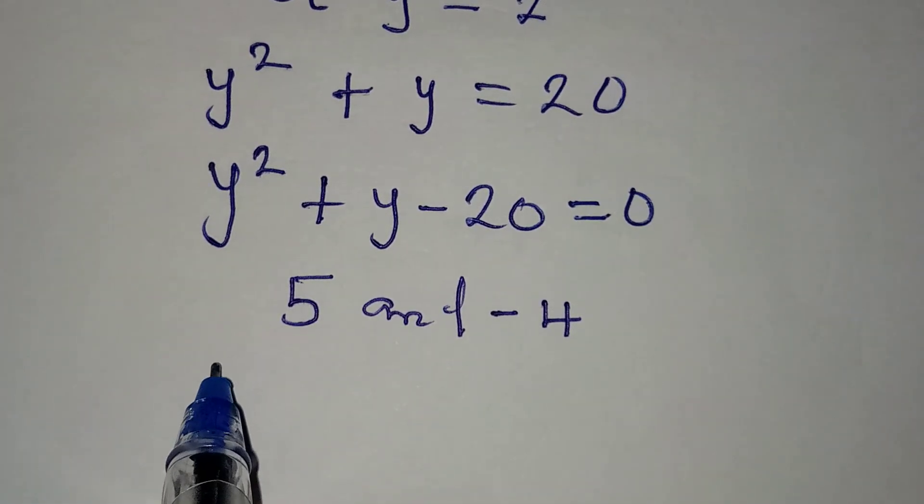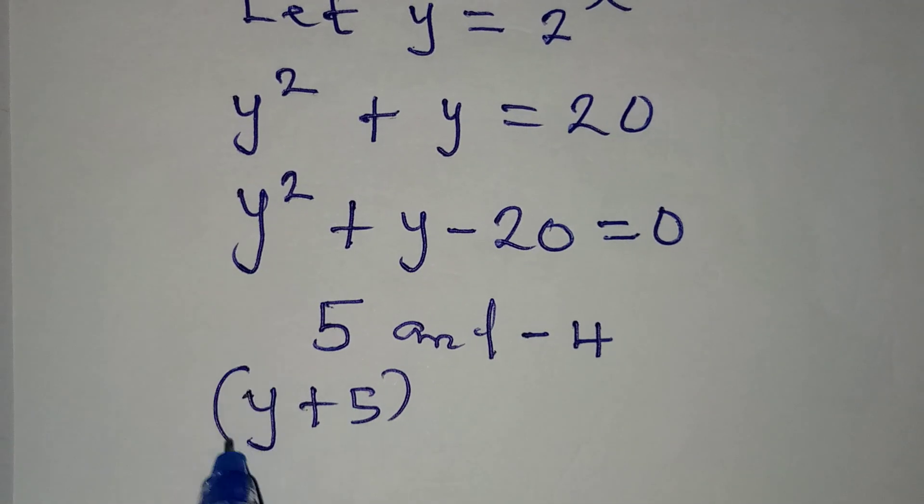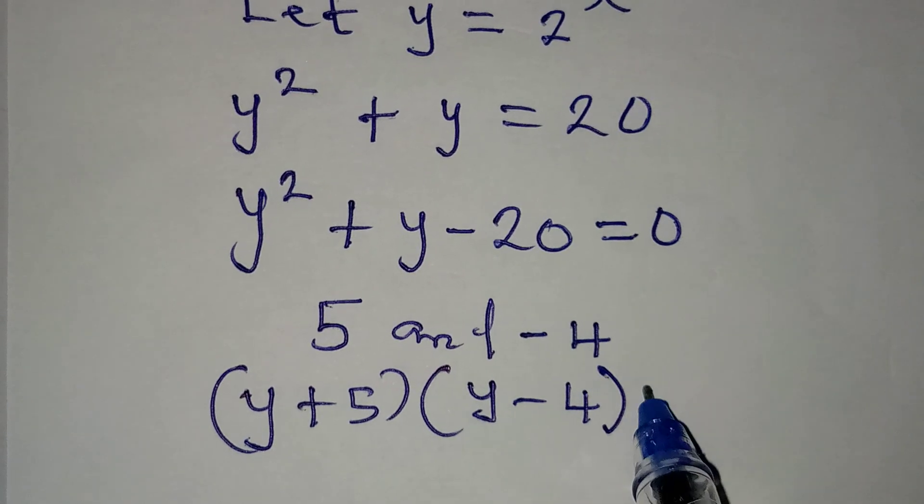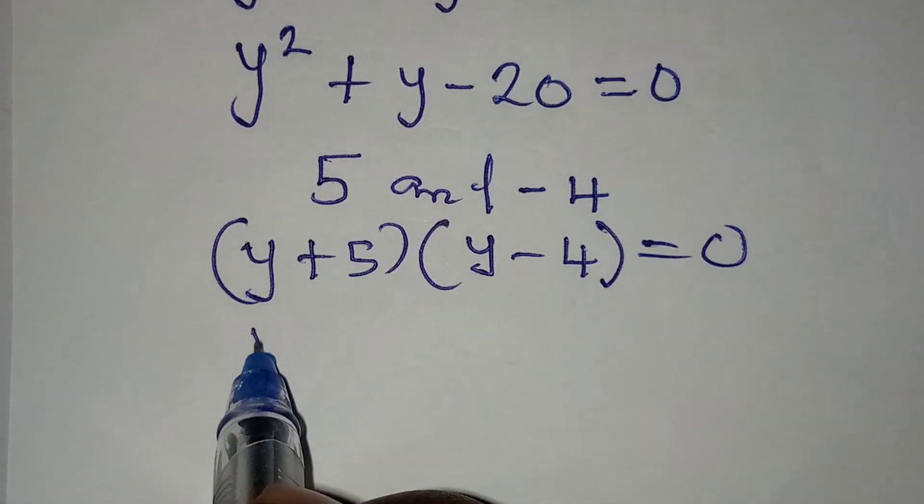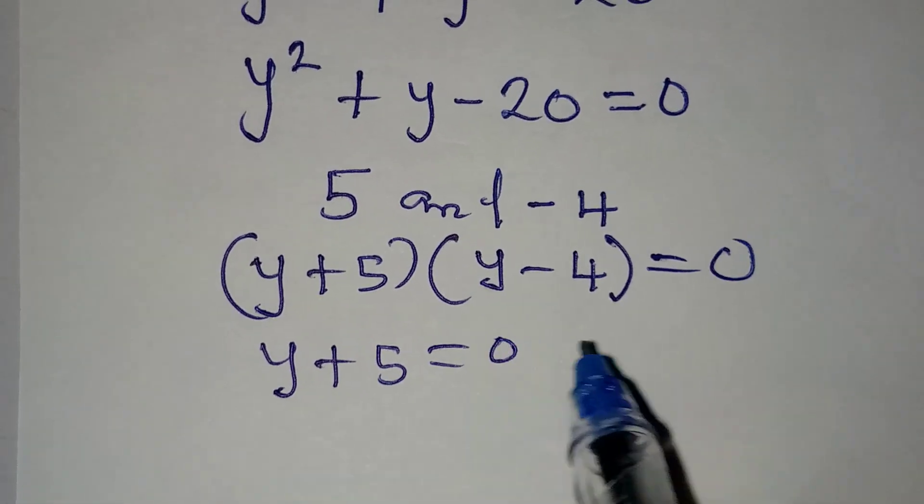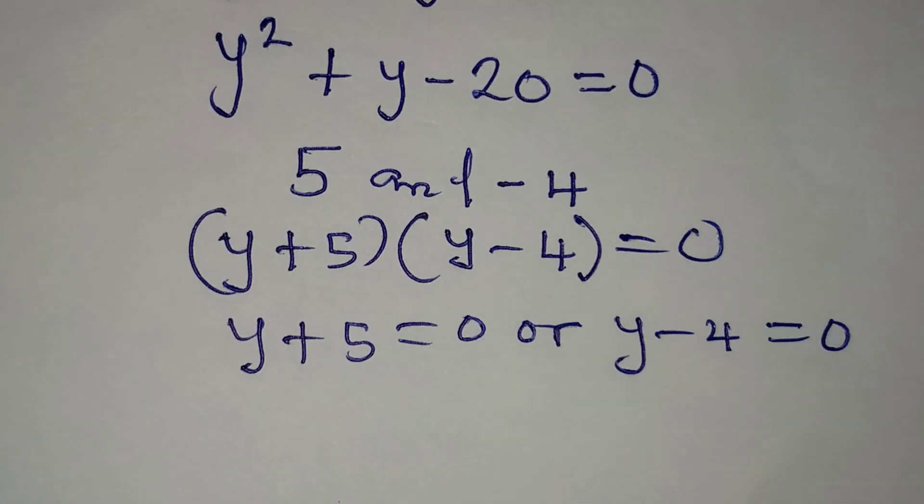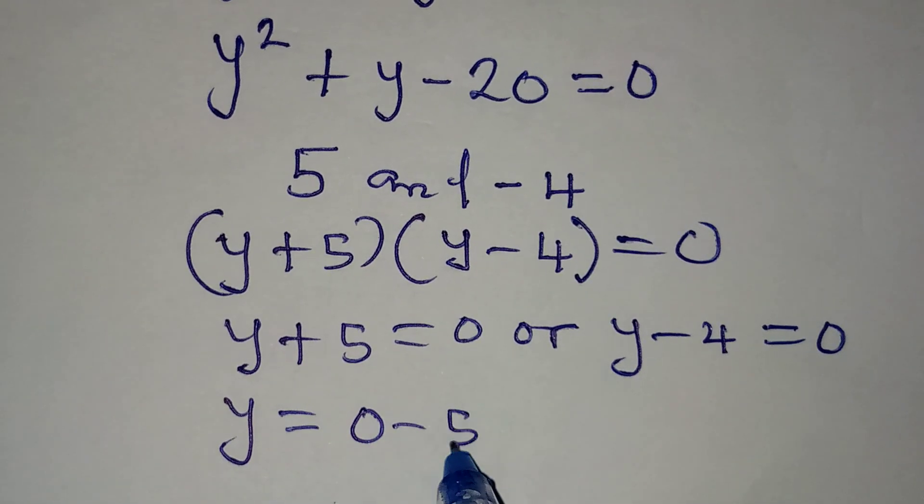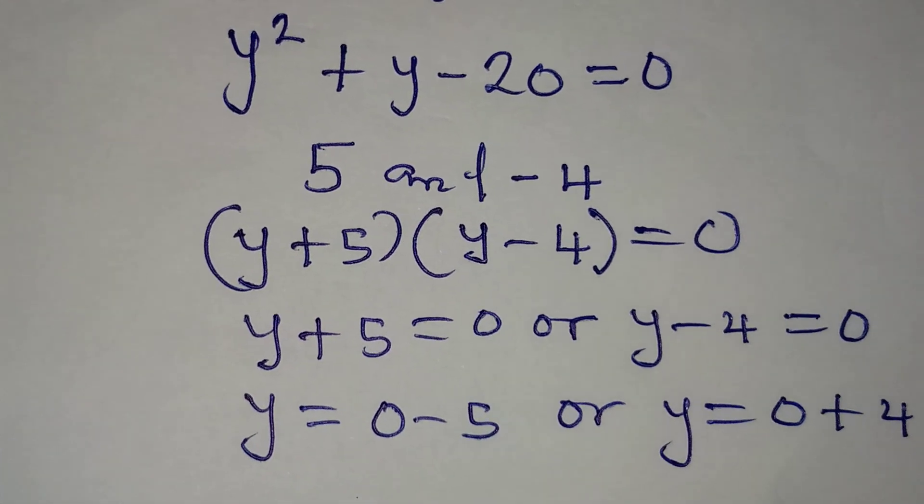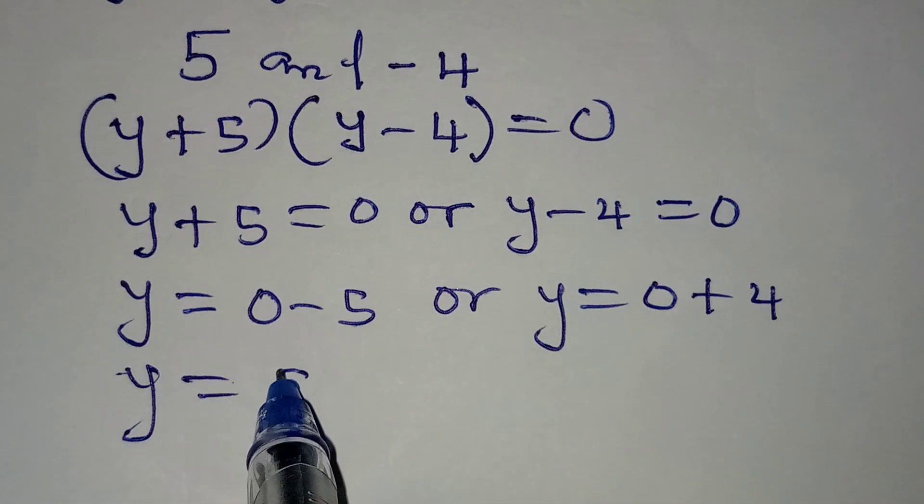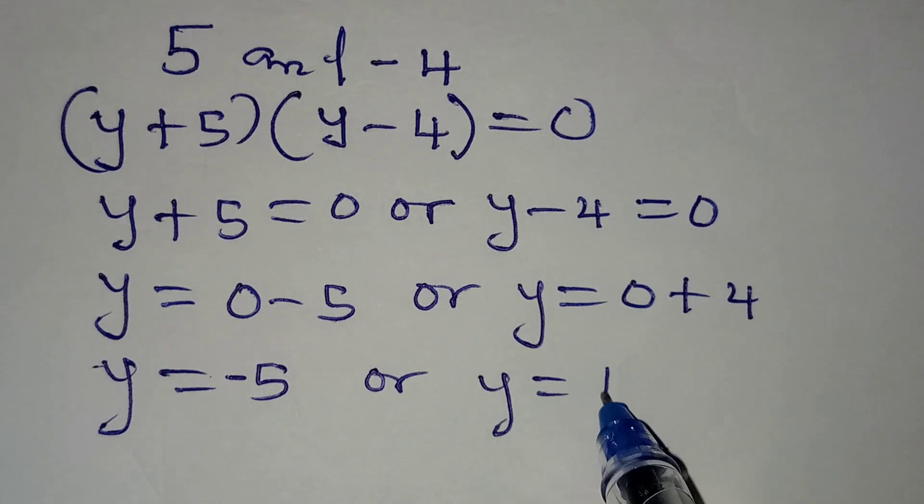In that case, we are going to have the factors of this as y plus 5 and then y minus 4, which will be equal to 0. And if we continue from here, then y plus 5 is either equal to 0 or y minus 4 is equal to 0. From here, y is equal to 0 minus 5 or y is equal to 0 plus 4. So y here is equal to negative 5 or on this side, y is equal to positive 4.